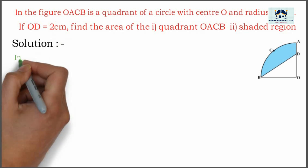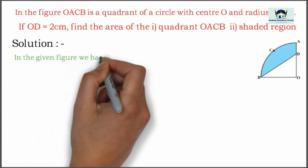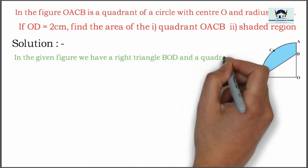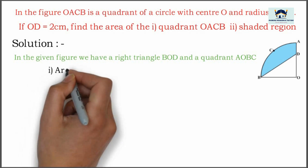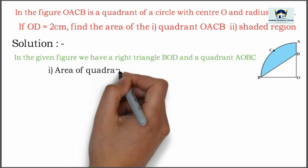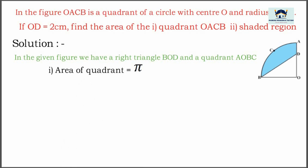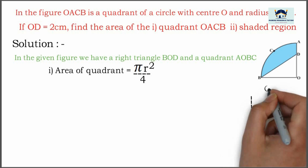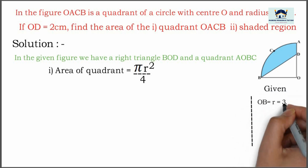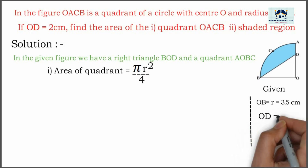Observe the figure carefully. In the given figure we have a right angle triangle BOD and a quadrant AOBC. First we will find area of the quadrant using the formula: pi r squared divided by 4. The given values are: OB is equal to r which is equal to 3.5 centimeter, and OD is equal to 2 centimeter.